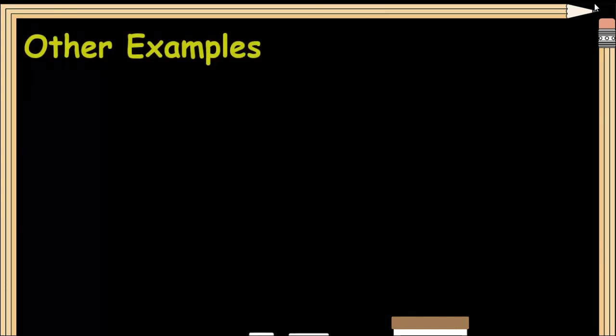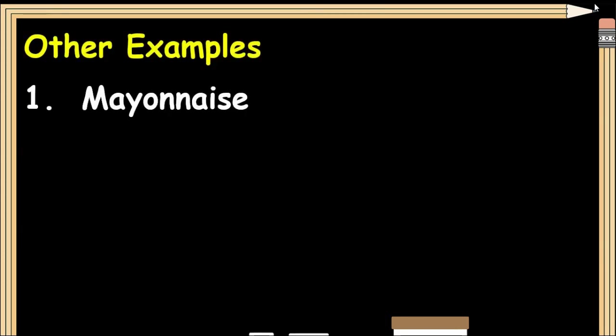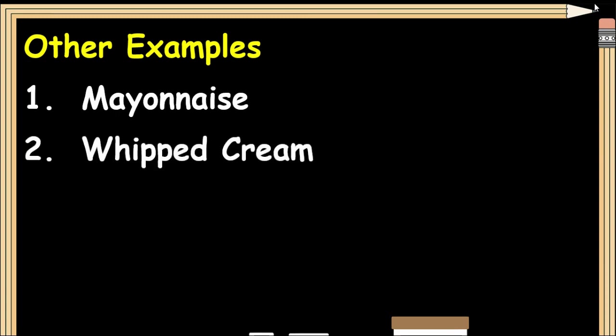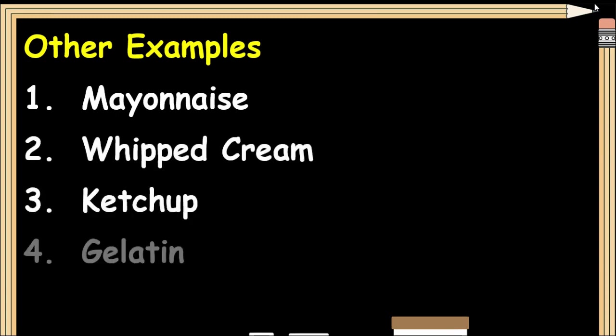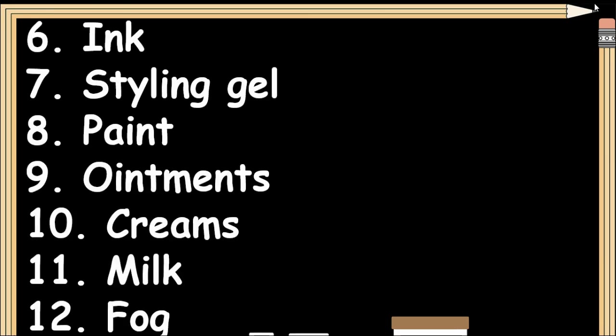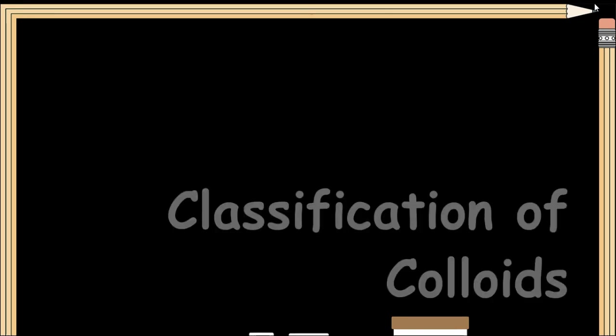Other examples of colloids are: mayonnaise, whipped cream, ketchup, gelatin, ink, styling gel, paint, ointments, cream, milk, and fog.